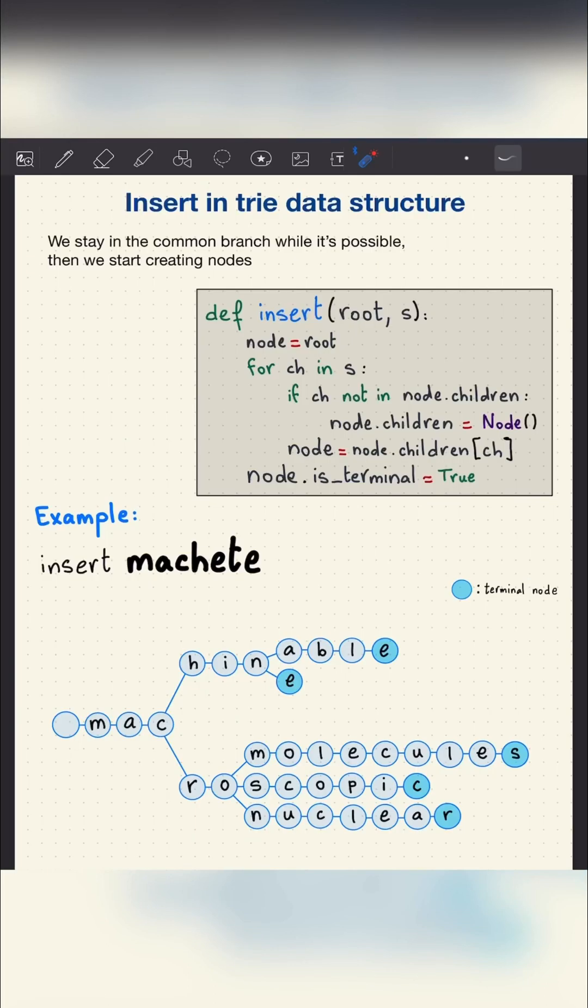How to insert in the trie data structure. The trie stores the same prefix only once, so if we already have the current prefix, we don't create new nodes. We stay in the common branch while it's possible, then we start creating new nodes.